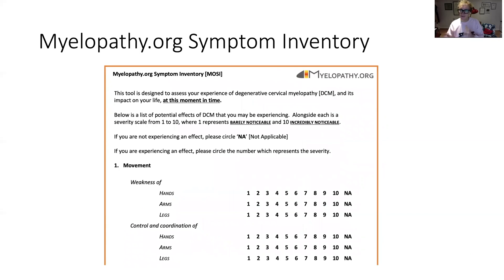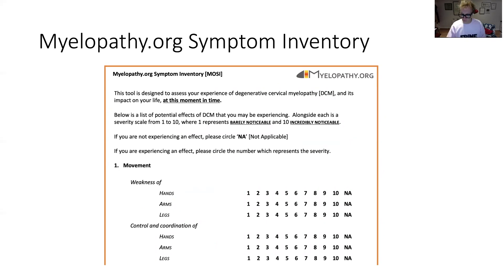We've been able to take that work and generate a very long list of all the different experiences and effects of the condition. By combining each of those effects with a severity scale of one to ten — where one is barely noticeable and ten is incredibly noticeable — but also NA (not applicable), because we know that not everyone experiences everything, this is really our first attempt at an assessment tool: something we're calling the myelopathy.org symptom inventory.